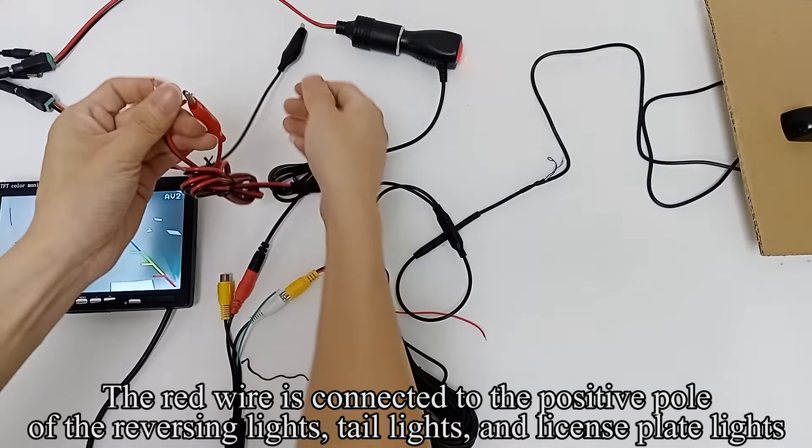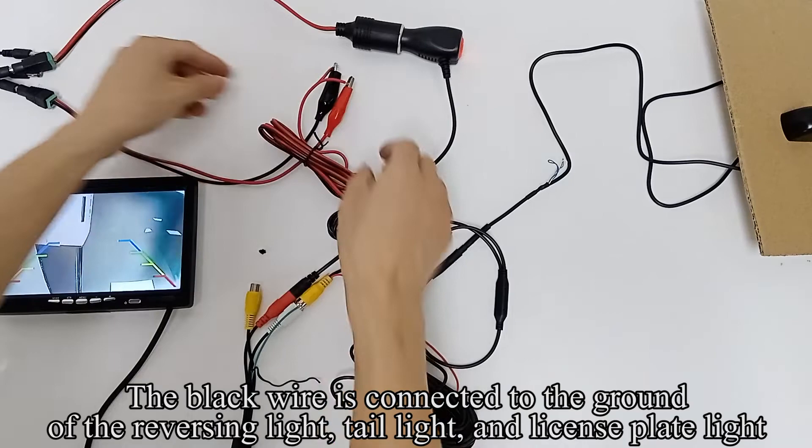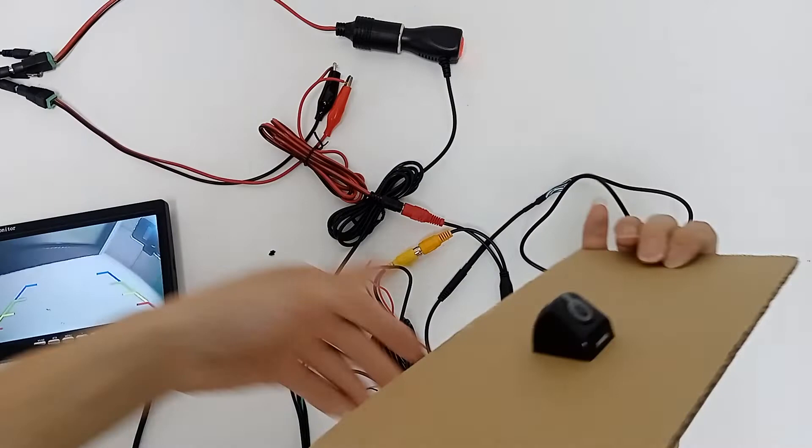The red wire is connected to the positive pole of the reversing lights, tail lights, and license plate lights. The black wire is connected to the ground of the reversing light, tail light, and license plate light. The image appears on the screen.